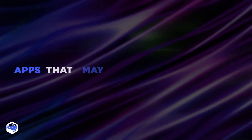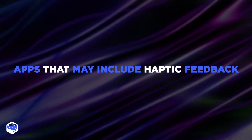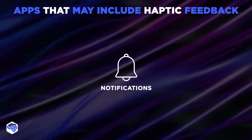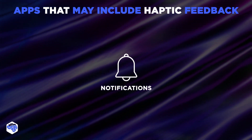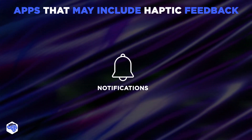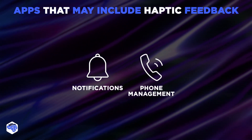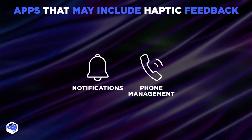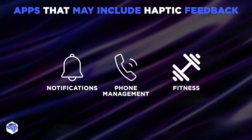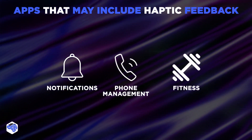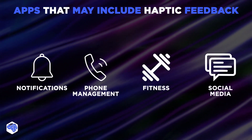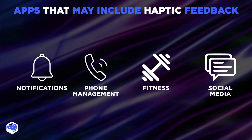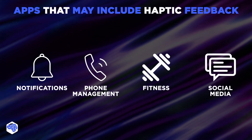Let's overview the apps that may include haptic feedback. Applications for notifications — haptic feedback may be used to view information, add reminders, appointments, tasks, and alarms. Phone management apps — haptic feedback may be used for adding and searching for a contact, viewing the last call, and last voicemail. Fitness apps — haptic feedback may be used to view templates, exercise, and share activities. And chats and social apps — haptic feedback may be used for notifications for new messages, group invitations, profile visits, and more.